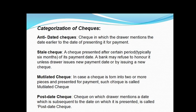A mutilated cheque is one that has been torn into two or more pieces and presented for payment. If a cheque is cut into two or more pieces and presented at the cash counter of a bank, it is called a mutilated cheque. The bank will not make payment against it without getting confirmation from the drawer.